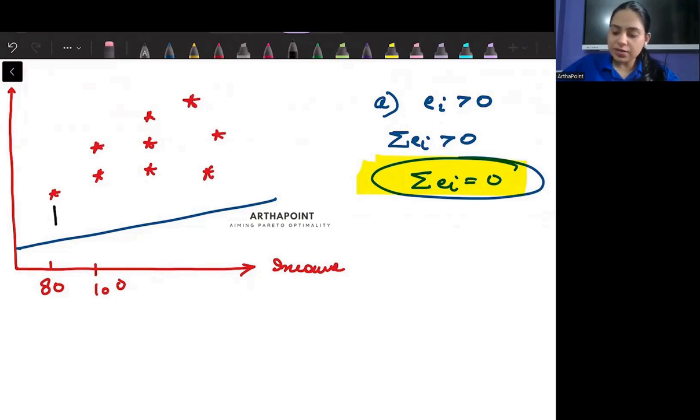Here, this is my error term, right? I can very well, and this is my error term here. This is my error term here. This is my error term here. However, I can very well form a line in such a way that I can reduce these errors. So I can take the line a little upward and I will be able to lower the errors clearly. My gap between actual and predicted value will fall.